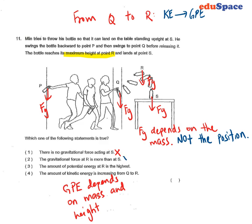options 1 and 2 will be out. And the amount of gravitational potential energy is the highest - that is true because the potential energy depends on the mass and the height.